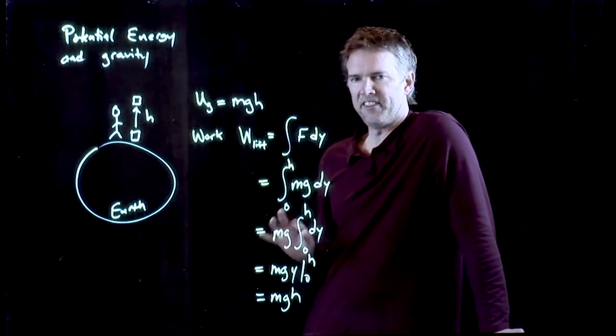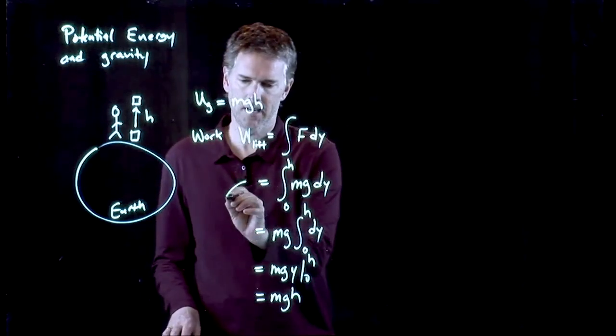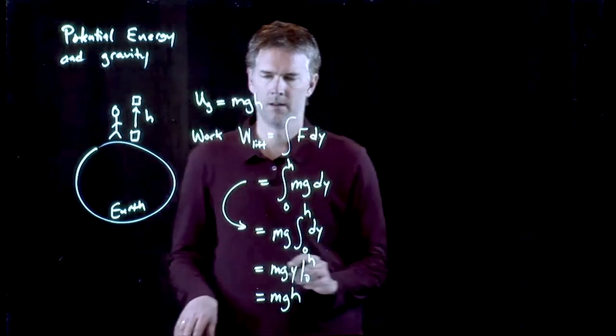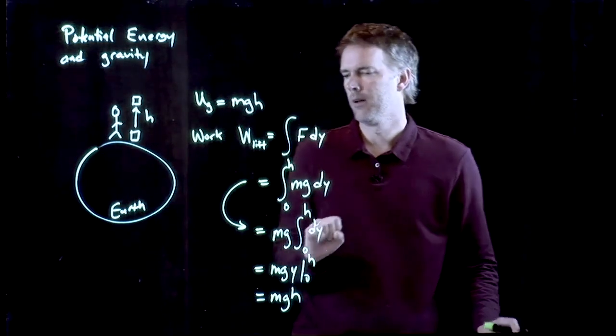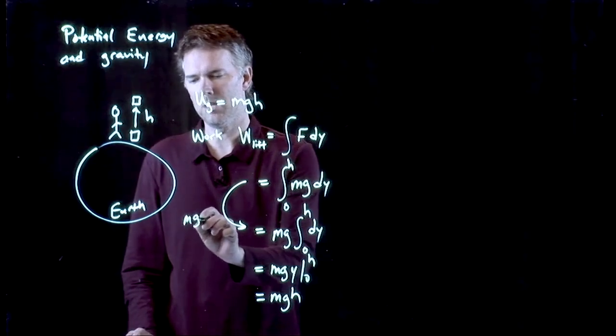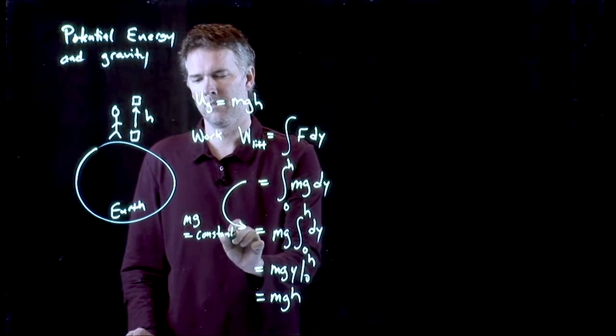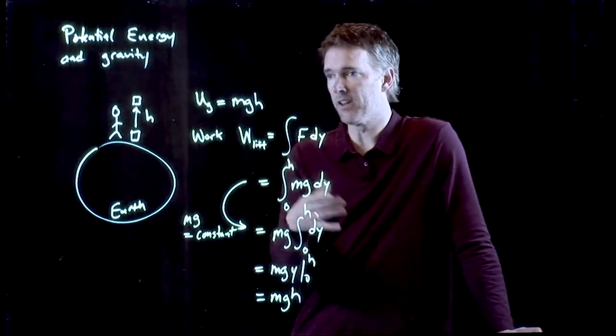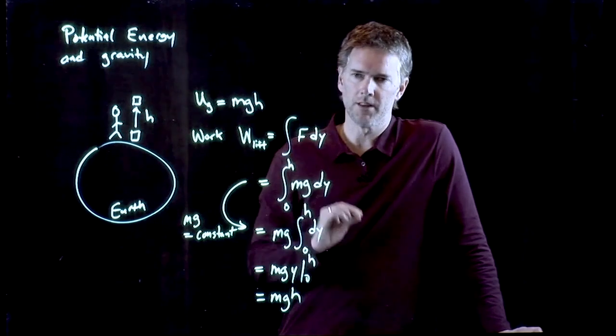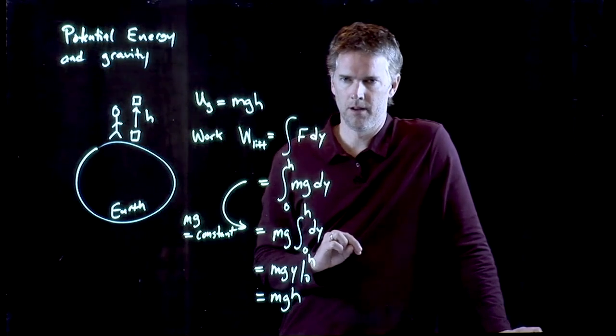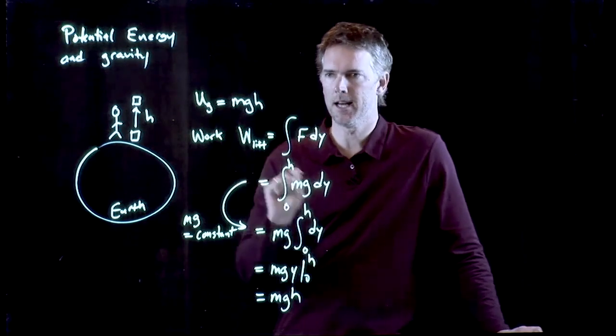But there was a crucial step that we took there. The crucial step was right here. We went from this integral to this step because mg was constant. And if mg is constant, it comes out of the integral. You can put it in front of the integral. But what if mg is not constant? If mg is not constant, you can't do that step. You cannot take it out of the integral.